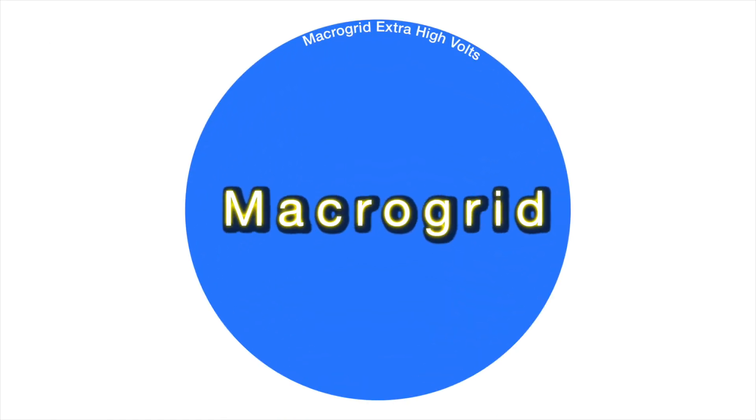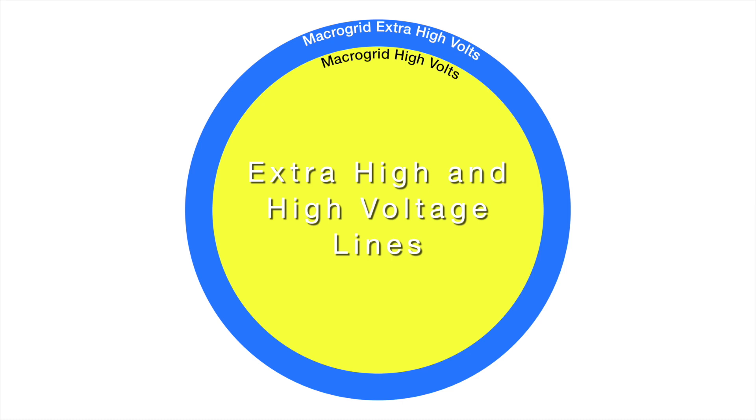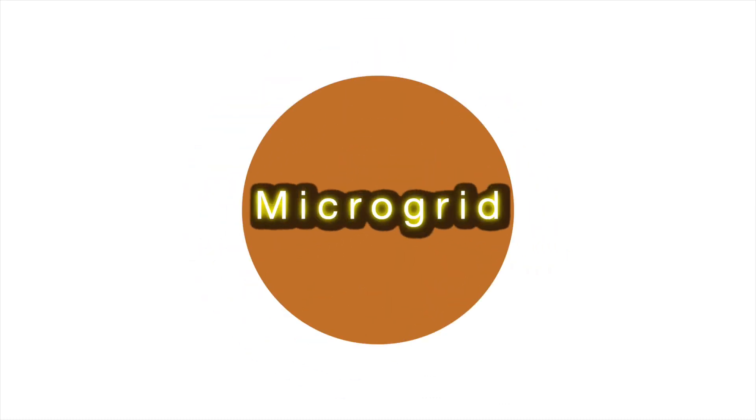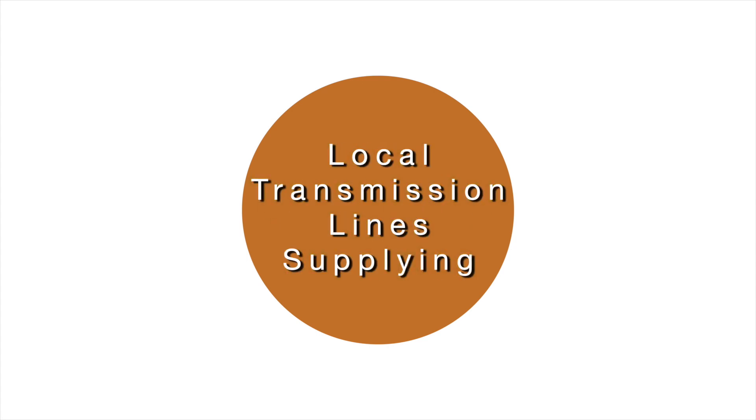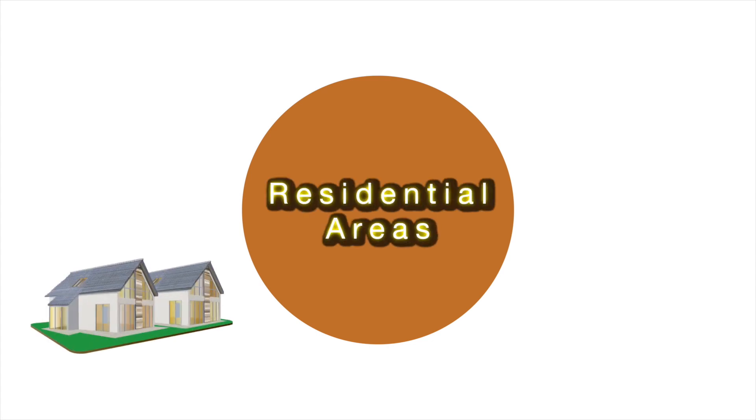At the heart of every macrogrid system, at the end of the extra high and high voltage transmission lines, is the local power distribution network. This is in itself a microgrid, supplying low voltage through local transmission lines, from 220 to 480 volts, to things like residential areas,